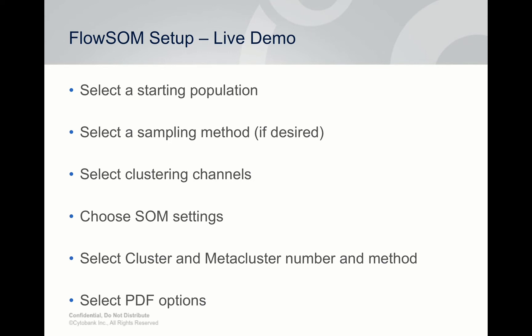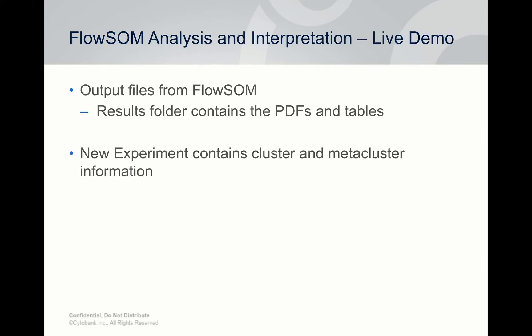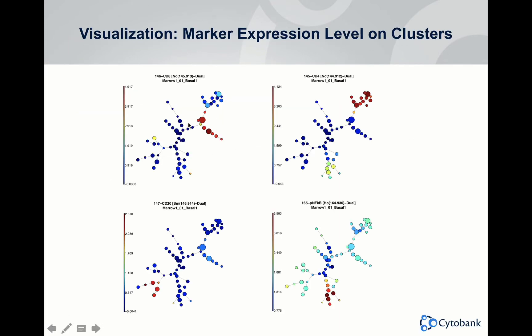The output files are similar to a SPADE tree — each channel you selected colors the nodes by the expression level in that channel. Here you can see what CD8, CD4, CD20, or NF-κB expression looks like across all your different populations.